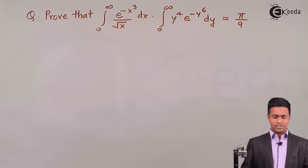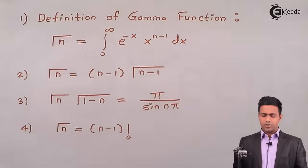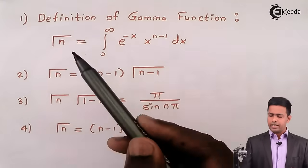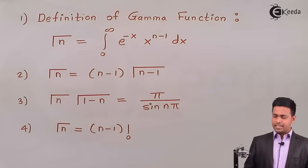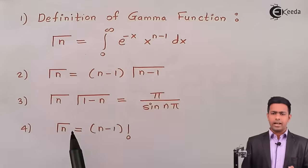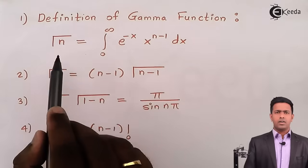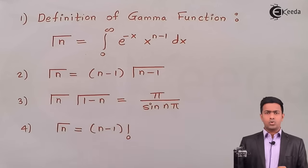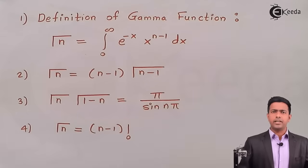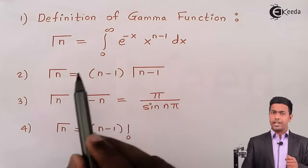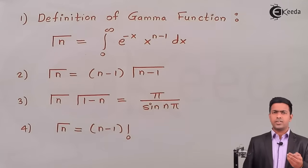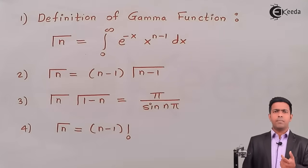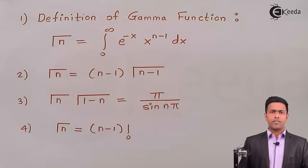Before starting, let's learn the definition of gamma function. The gamma function states that the integration from 0 to infinity of e^(−x) · x^(n−1) dx equals Γ(n). Whatever is the power of x, we just add 1 and write that number inside the gamma. The value inside the gamma is always 1 greater than the power of x.